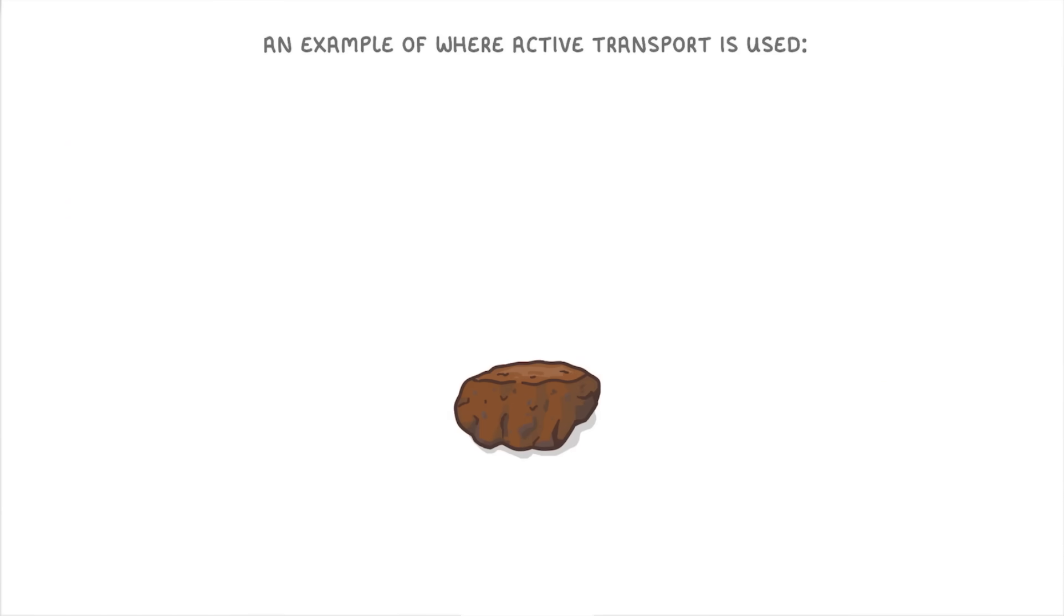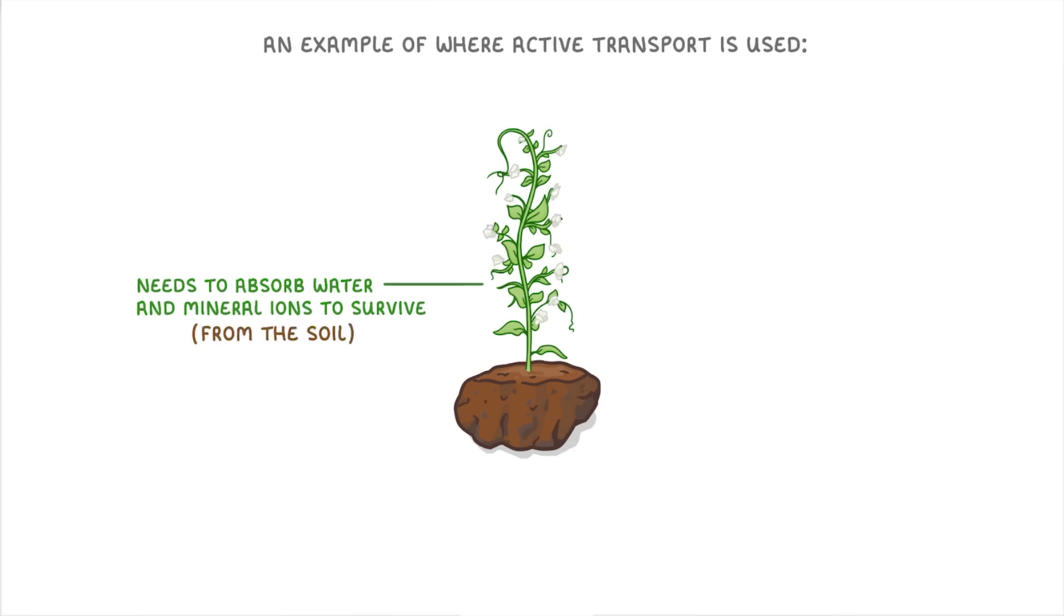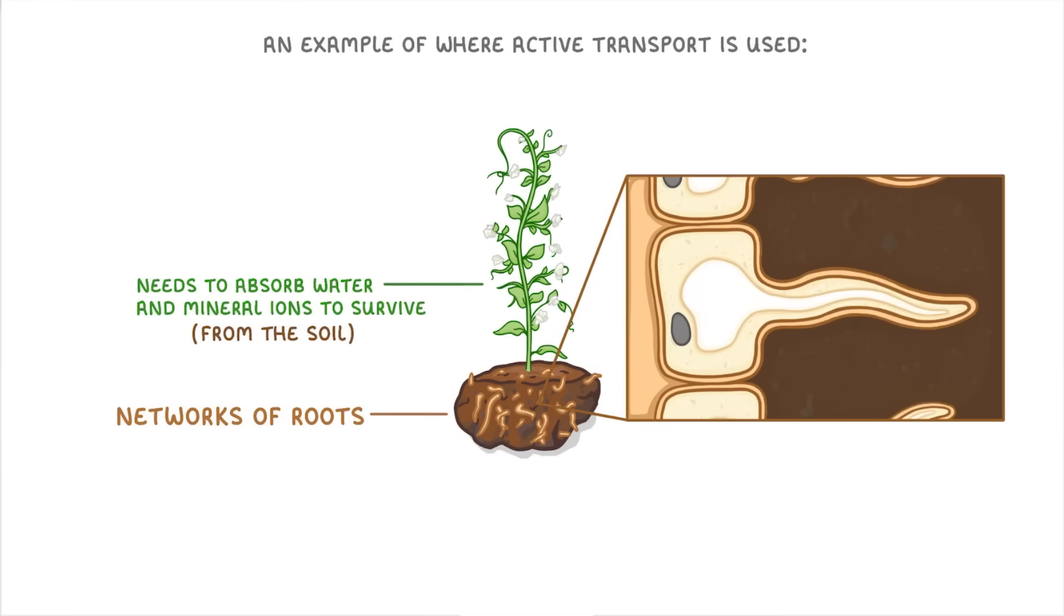Next up, we need to look at an example of where active transport is actually used. If we take a plant like this one, it needs to absorb loads of water and mineral ions in order to survive, which it will have to get from the soil. To help with this, plants have networks of roots that protrude into the ground, and if we zoom in a bit, we can see that around the outside of the roots are special cells called root hair cells.